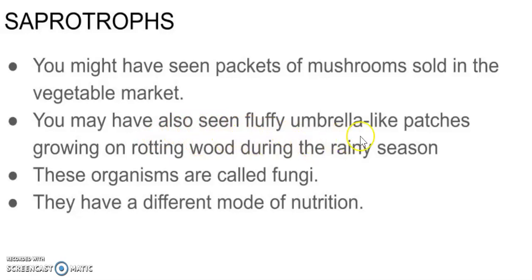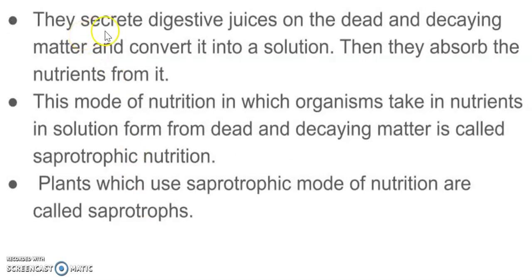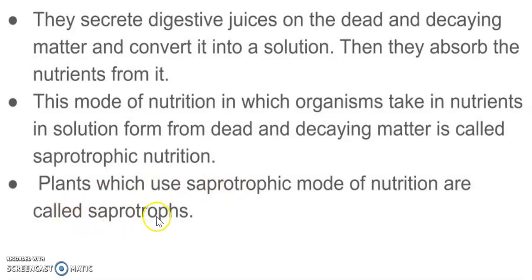If we leave some things like roti from the refrigerator, we will see that umbrella-like patches are made on them. We call it fungi. In fungi, the mode of nutrition is slightly different. What happens is that fungi grow on the food, secrete digestive juices which convert the matter into a solution, and then they absorb their nutrients from that solution. This mode of nutrition, in which organisms absorb their nutrients in solution form from dead and decaying matter, is called saprotrophic nutrition. The organisms that use this mode are called saprotrophs.